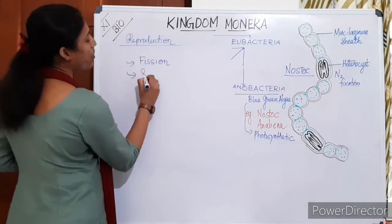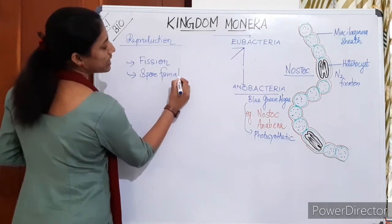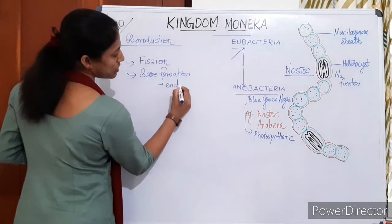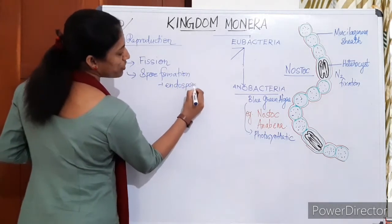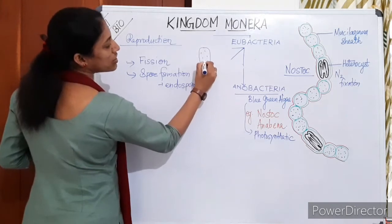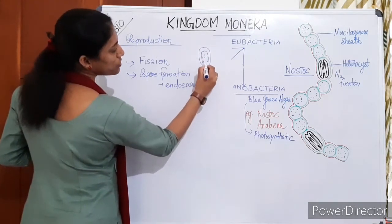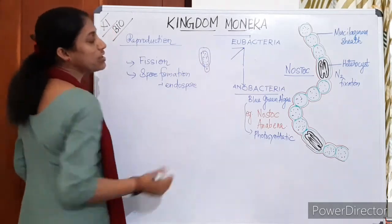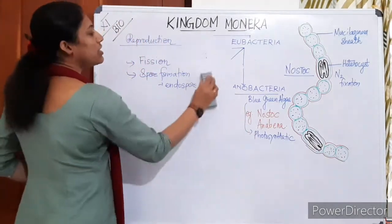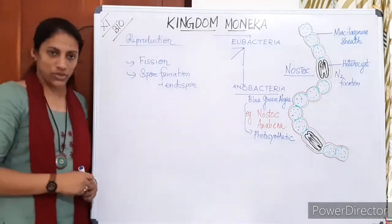Another method is spore formation. Most bacteria form endospores — one bacterium concentrates its contents into a spore. This is called endospore formation, so bacteria also reproduce by forming endospores.